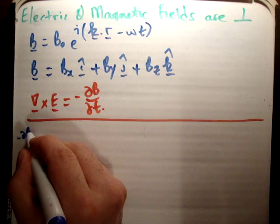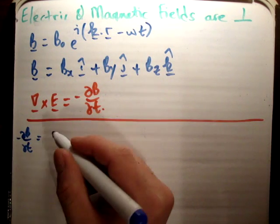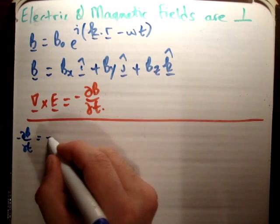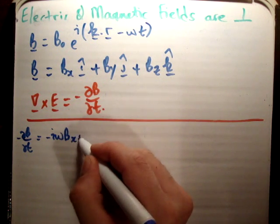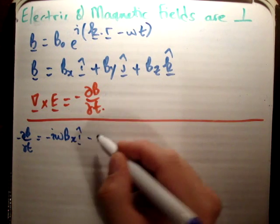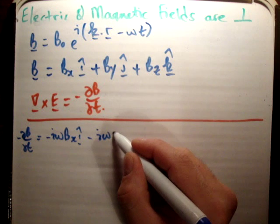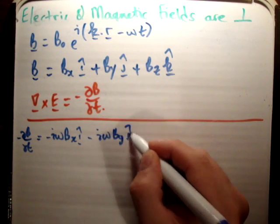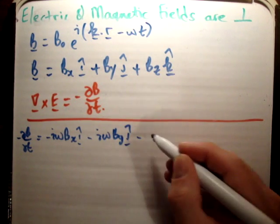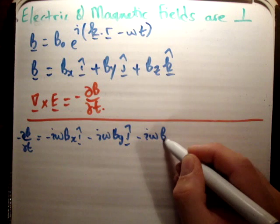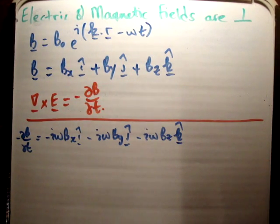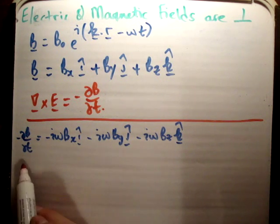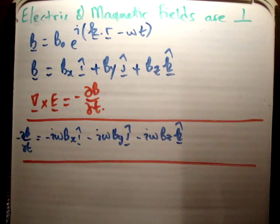You'll find that negative ∂B/∂t is equal to: negative iω·B_x in the i-hat direction, negative iω·B_y in the j-hat direction, and negative iω·B_z in the k-hat direction. If you just take a moment to look at it, you'll see that it makes perfect sense.